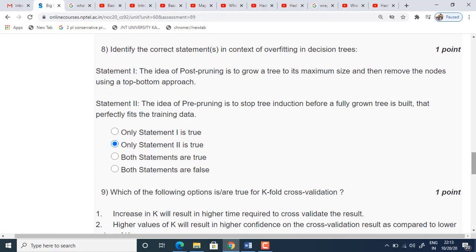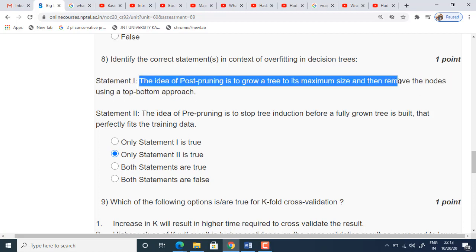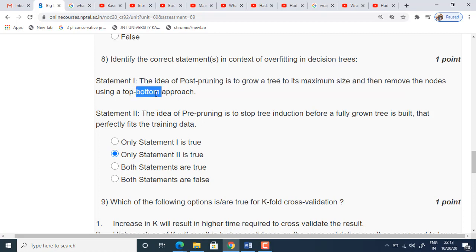Coming to eighth question. Identify the correct statements in context of overfitting in decision trees. In statement one, the idea of post-pruning is to grow trees to its maximum size and then remove the nodes using a top-bottom approach. Up to here, the statement is true. But removing the nodes using top-bottom approach is false. We remove the nodes using bottom-up approach but not top-bottom approach. Okay, the statement one is false.